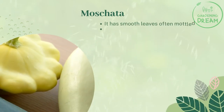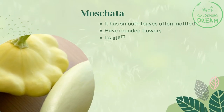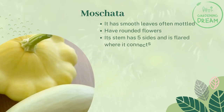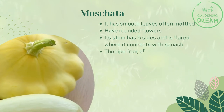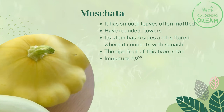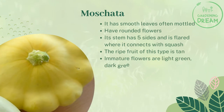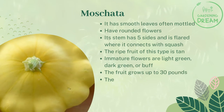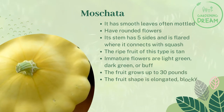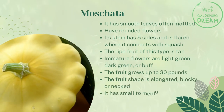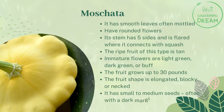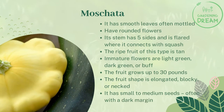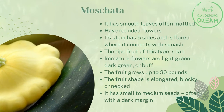Muscata: It has smooth leaves, often mottled, with rounded flowers. Its stem has five sides and is flared where it connects with the squash. The ripe fruit of this type is tan; immature fruits are light green, dark green, or buff. The fruit grows up to 30 pounds. The fruit shape is elongated, blocky, or necked. It has small to medium seeds, often with a dark margin.